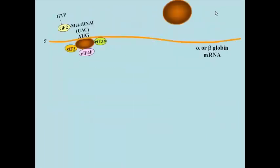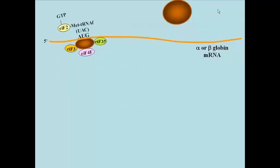In the next step, the large ribosomal subunit binds to the initiation complex, after which the GTP is hydrolyzed, still bound to EIF2, and all of the initiation factors come off.